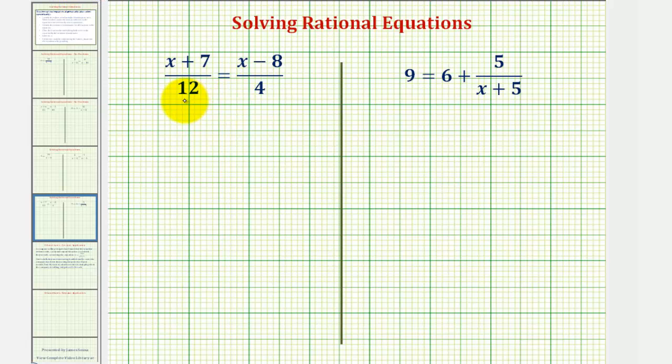Next we want to clear the fractions from the equation by multiplying both sides by a common denominator, hopefully the least common denominator. Looking at the denominators of 12 and 4, the least common denominator would be 12. Since 12 is the least common multiple of 4 and 12, however if we got stuck, we could use 12 times 4, which is 48, to clear the fractions from the equation.